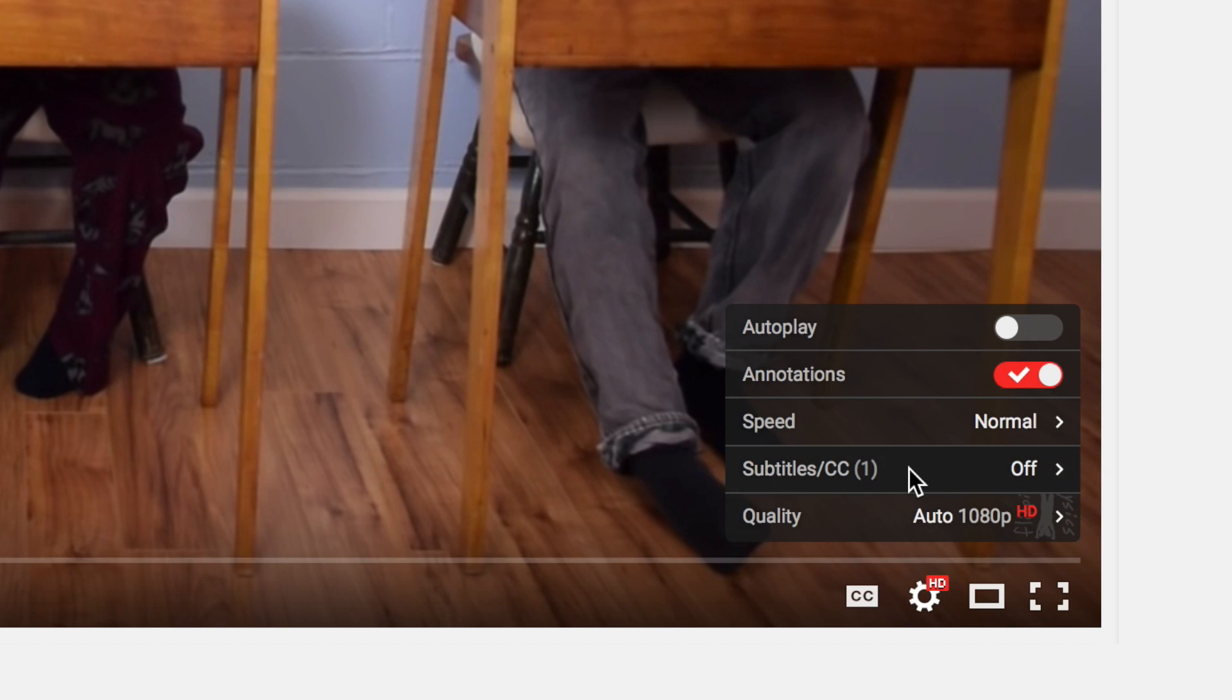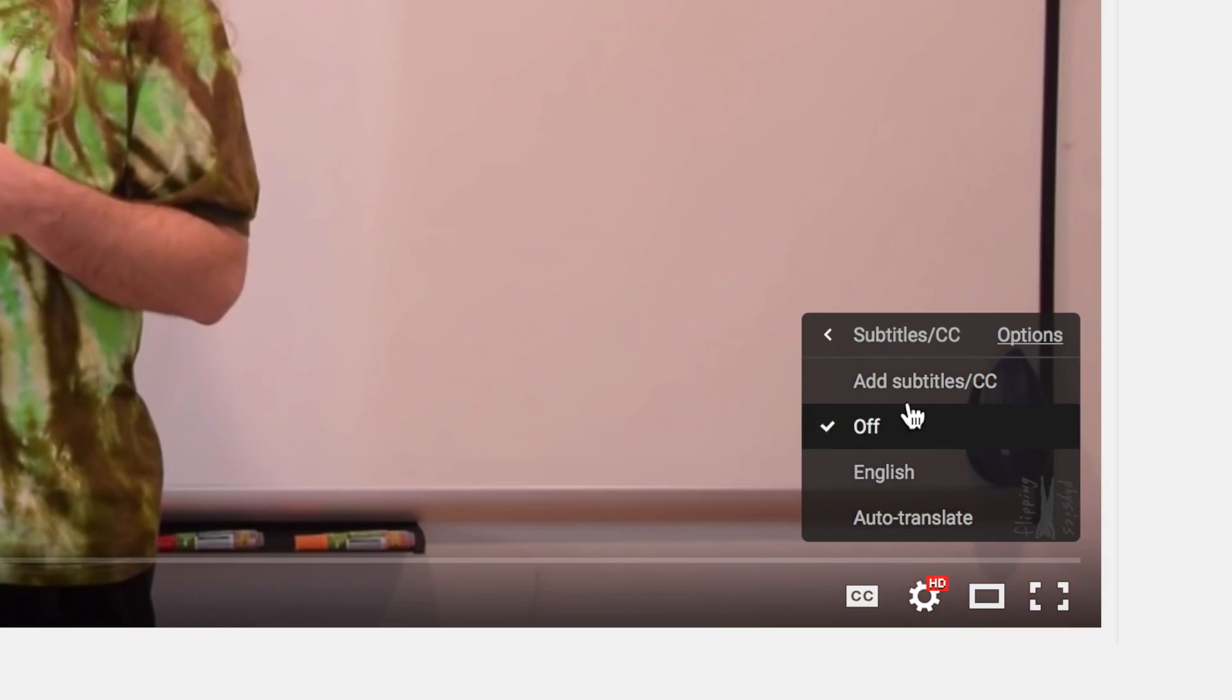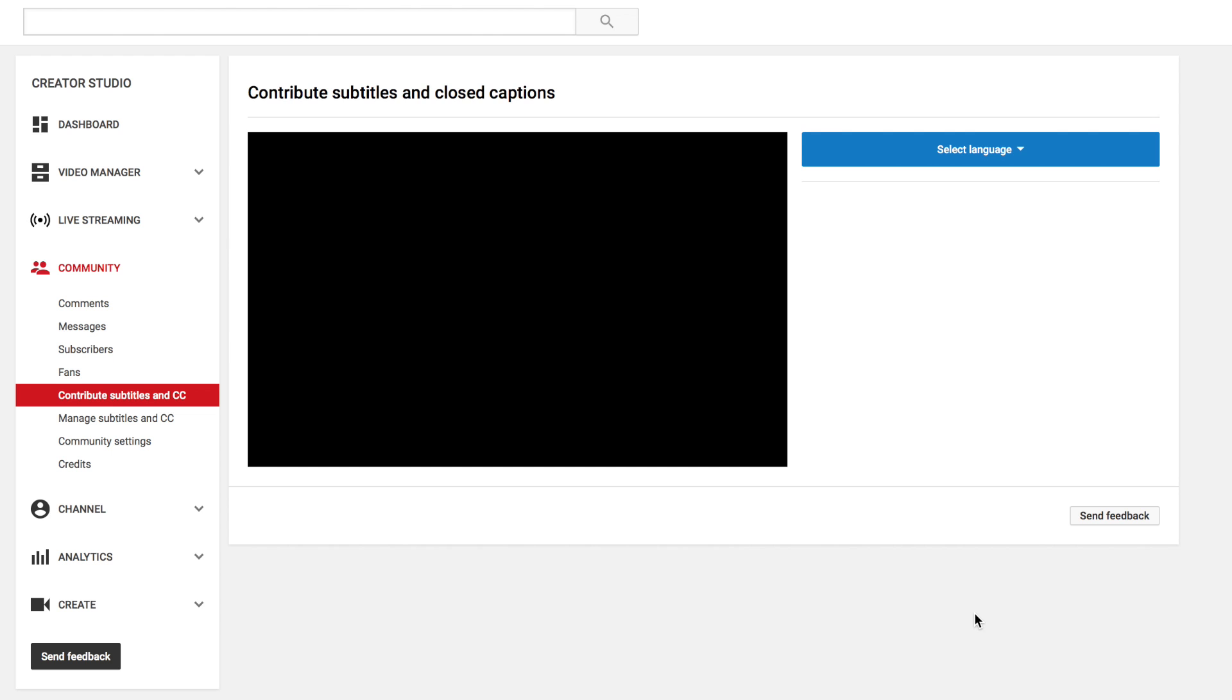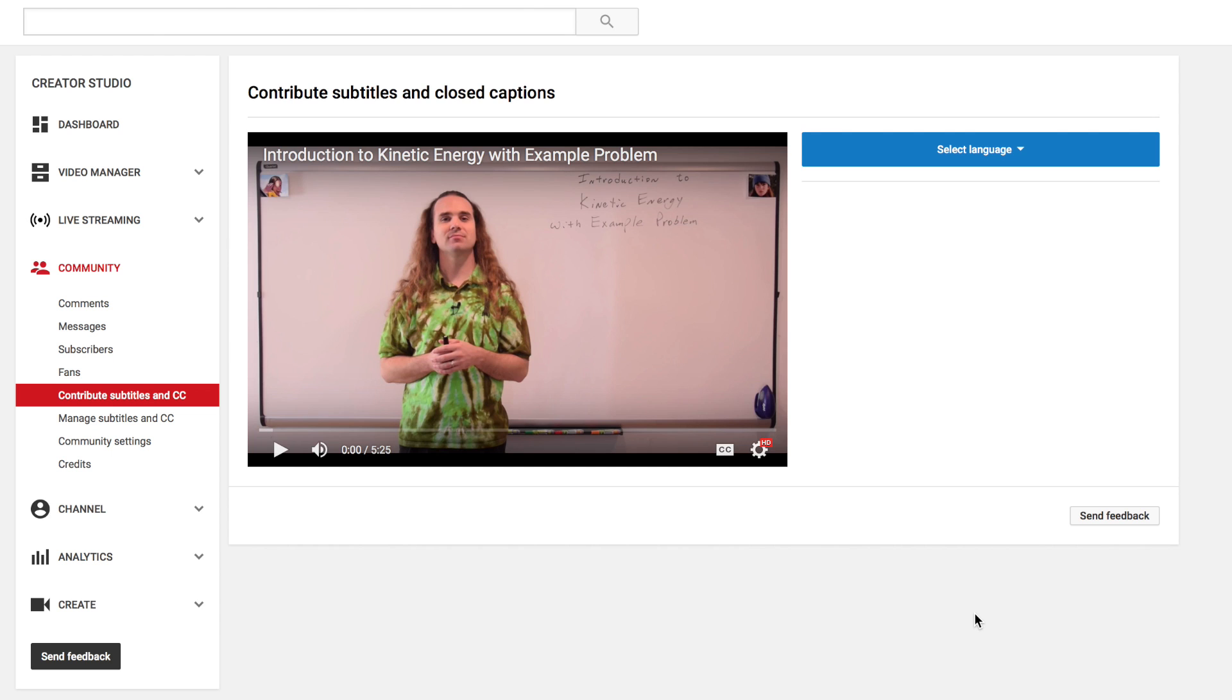Choose Subtitles CC and then choose Add Subtitles CC. Clicking Add Subtitles CC will open the Contribute Subtitles and Closed Captions section of your YouTube Creator Studio in a new browser window.